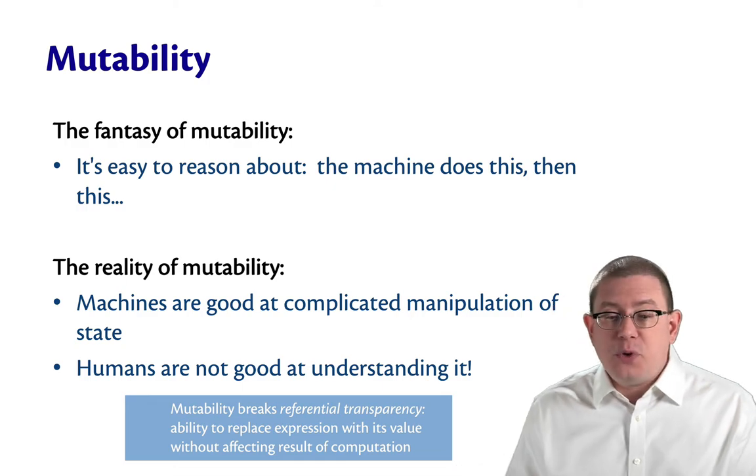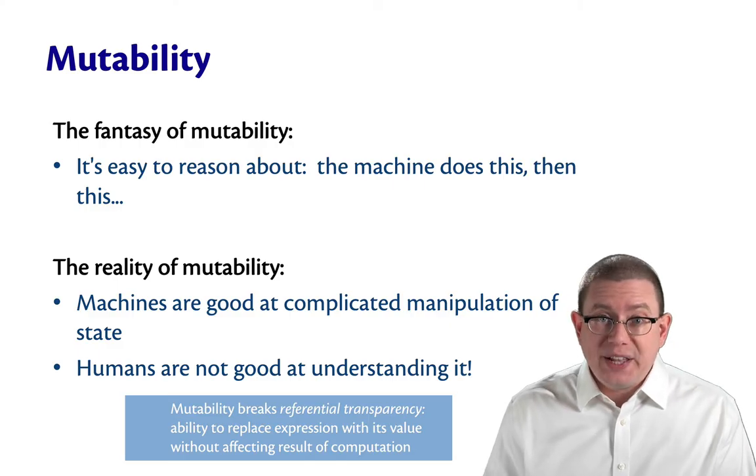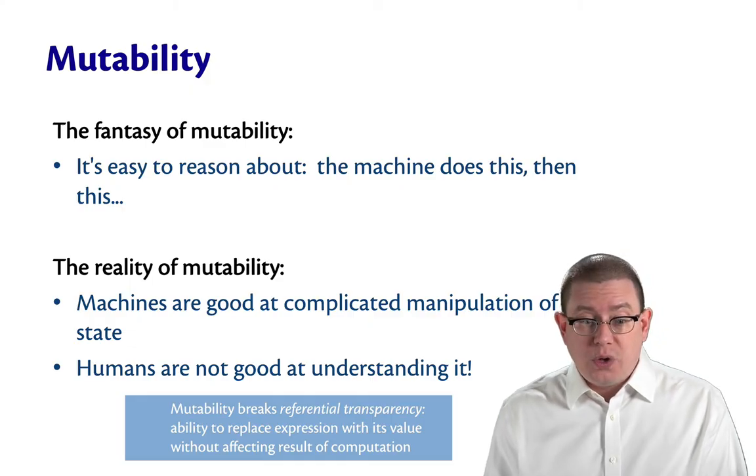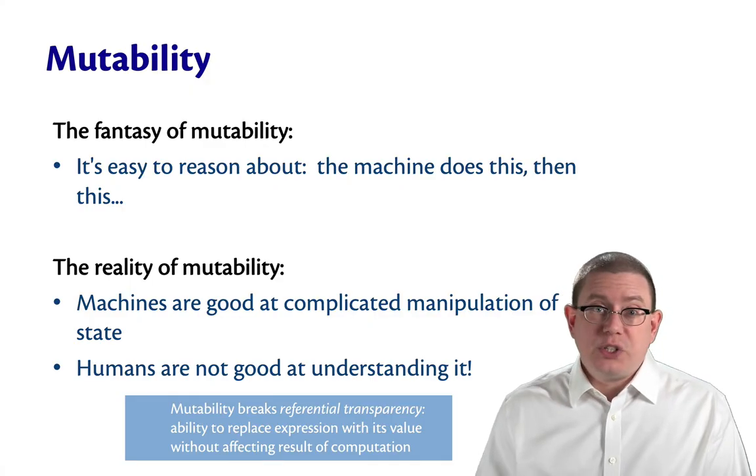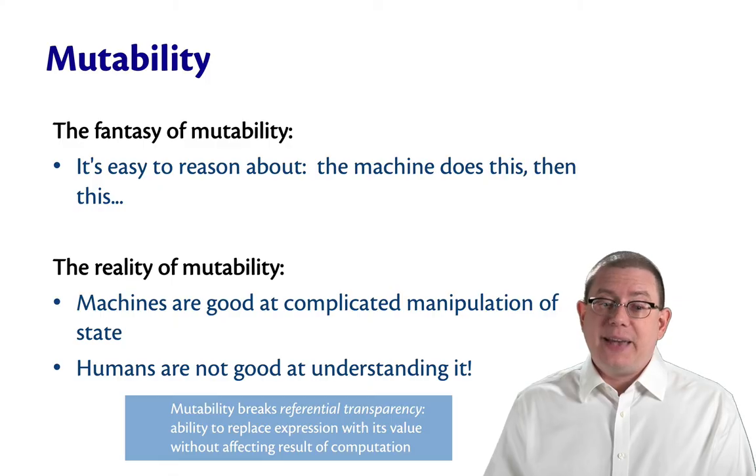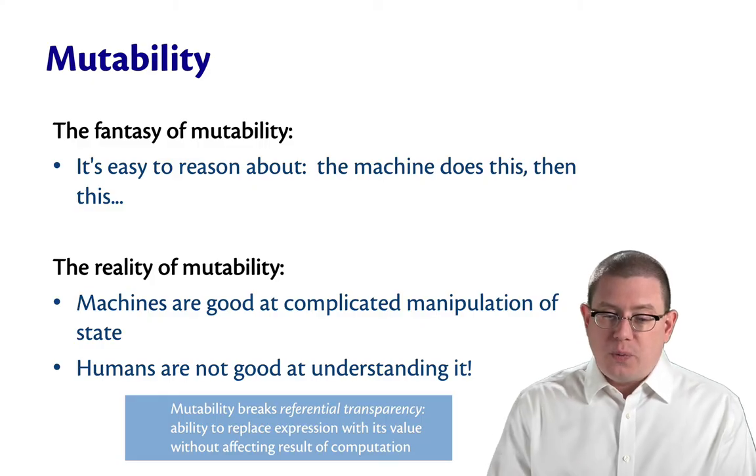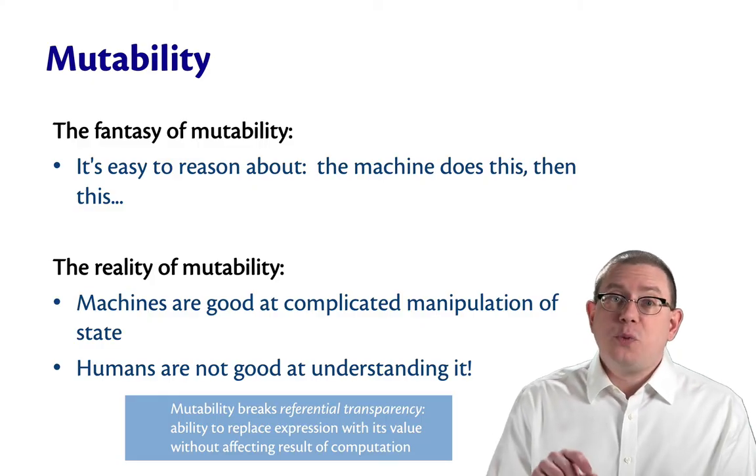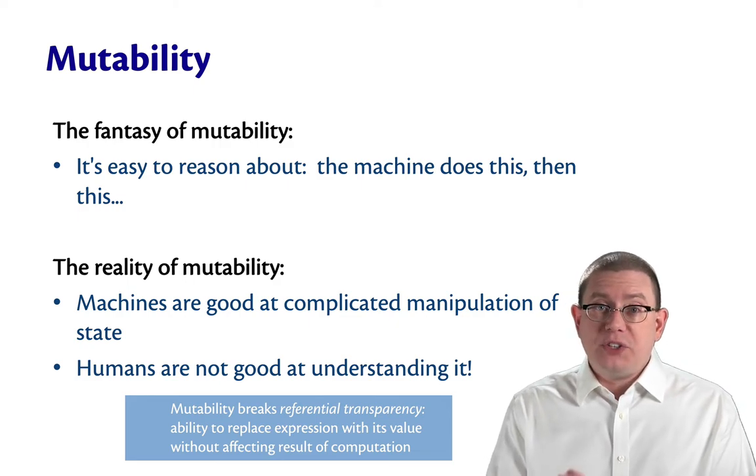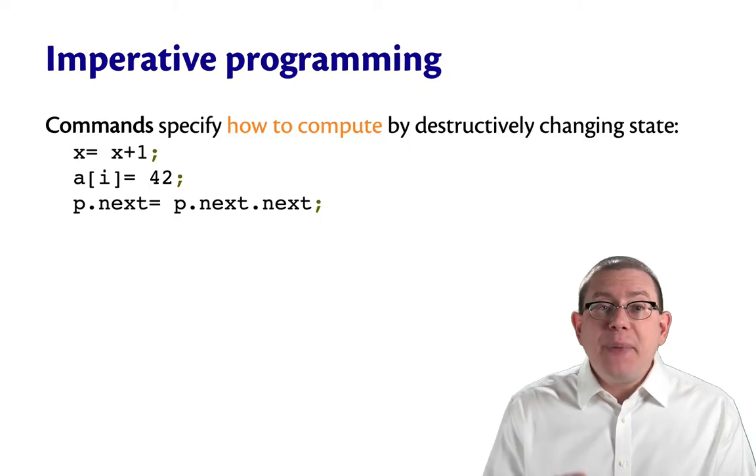What's really a problem with mutability, to use a fancy technical term now, is that it breaks what's called referential transparency. That means the ability to replace an expression with its value without changing the result of the computation. Referential transparency makes it easy for humans to reason about a computation, because we can just substitute one thing with another. Mutable state breaks that, because a variable can change its value from one time to another.